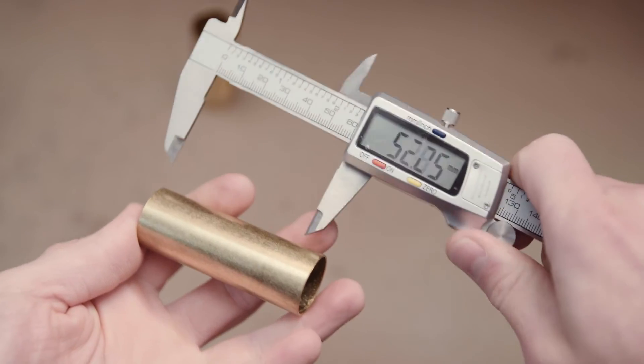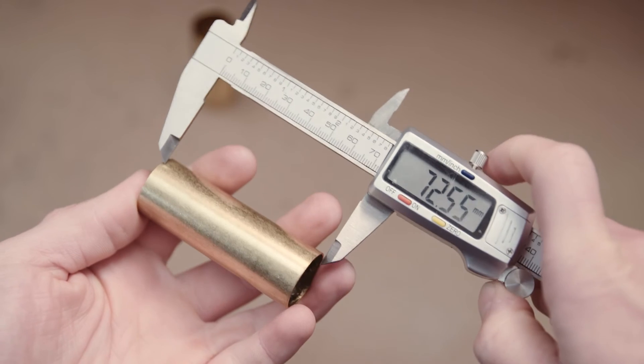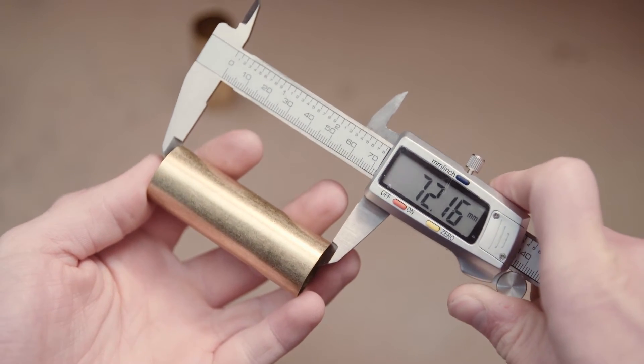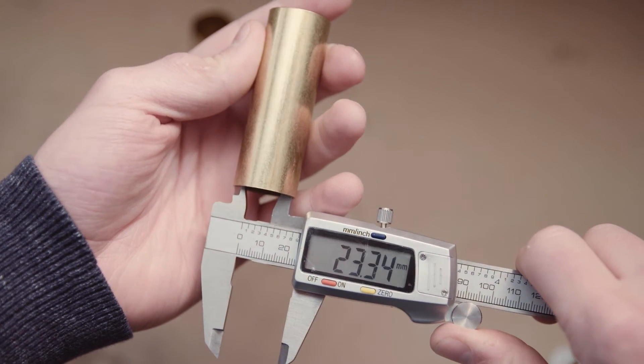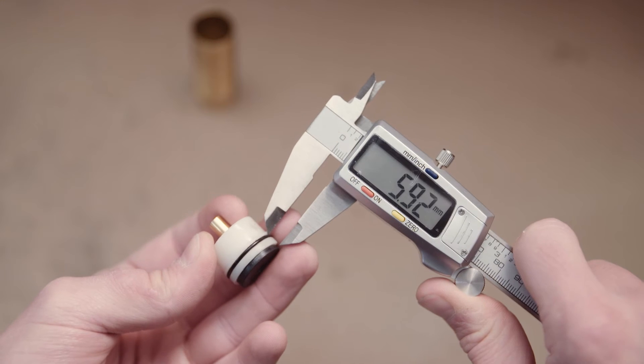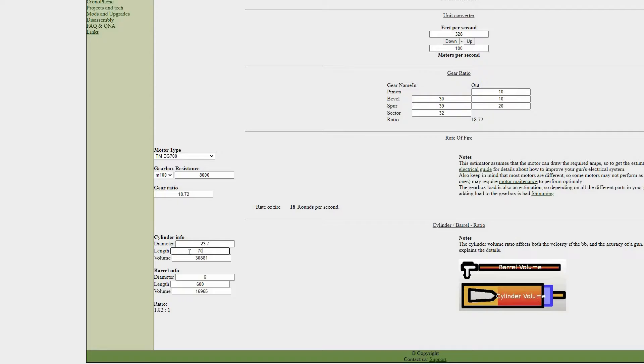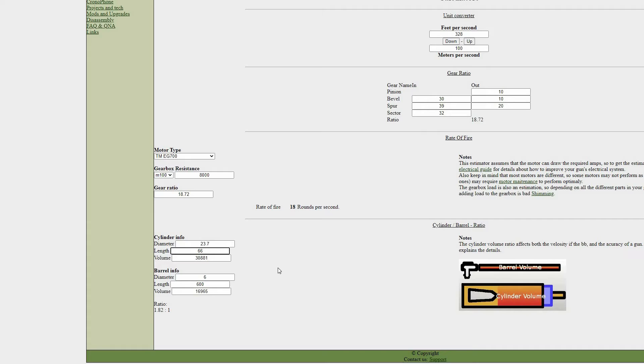Here I'm going to measure the length and diameter of my full cylinder to get the values so I can put it into the calculator. Once you've measured your full cylinder, you need to take away the bit of room that the cylinder head actually takes up inside the cylinder. So I'm just measuring that, and I'm going to take that number away.